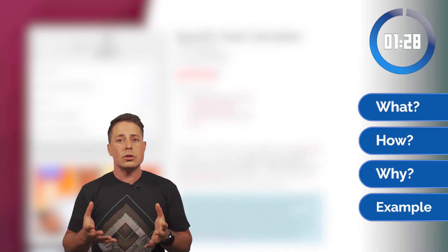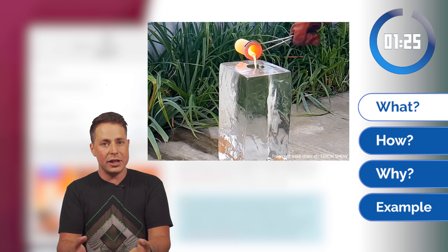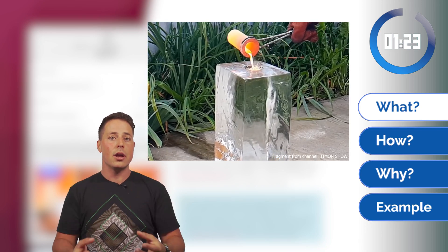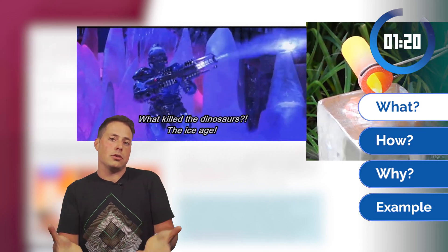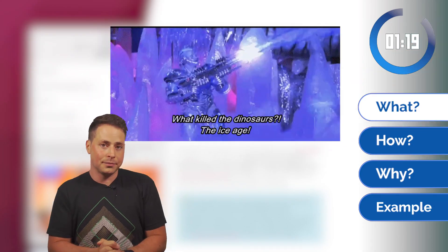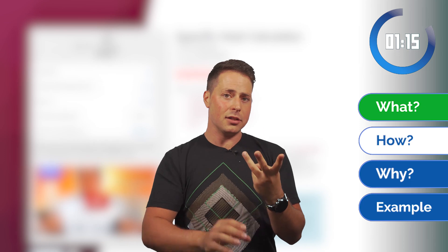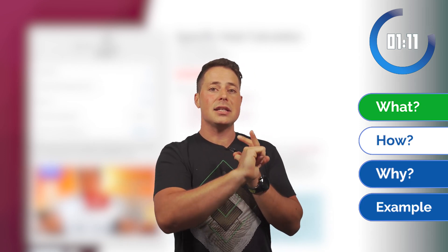When we want to change the temperature of a substance we need to give it energy if we want to increase the temperature, or we need to take away energy if we want to make it colder. How much energy we need depends on three factors: the mass of the substance, the difference in temperature we want to achieve, and the specific heat of the substance.